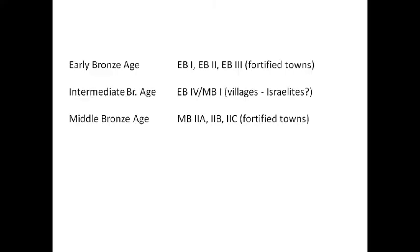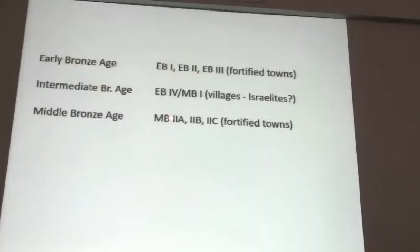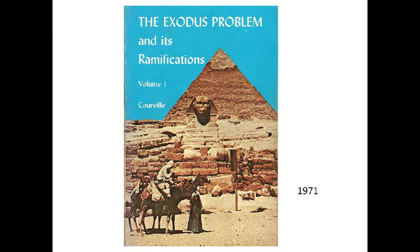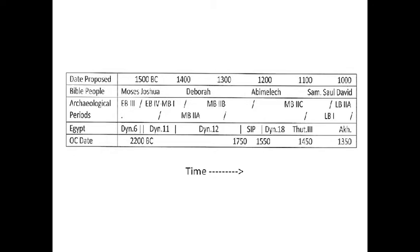Both the Early Bronze Age and Middle Bronze Age were periods of fortified towns, but the EB4/MB1 period is more like villages and nomads. I'm suggesting this was the arrival of the Israelites. This idea was originally Donovan Courville's, published in his 1971 book 'The Exodus Problem and Its Ramifications.' I thought the rest of his chronology was wrong, but I liked the idea of the Old Kingdom Exodus and end of Early Bronze Age conquest.